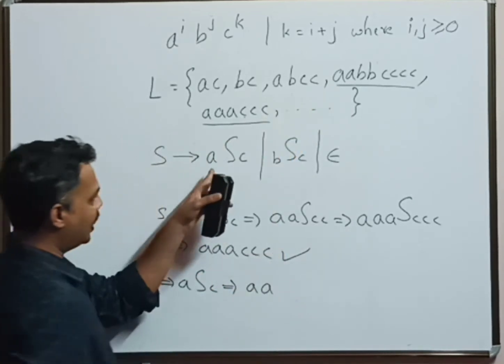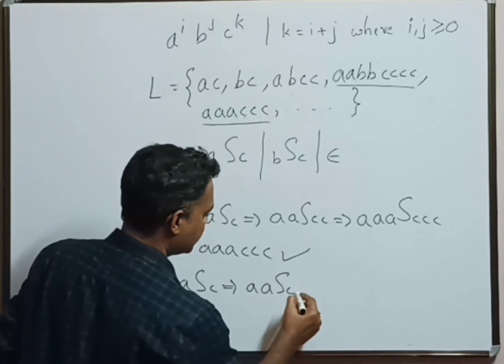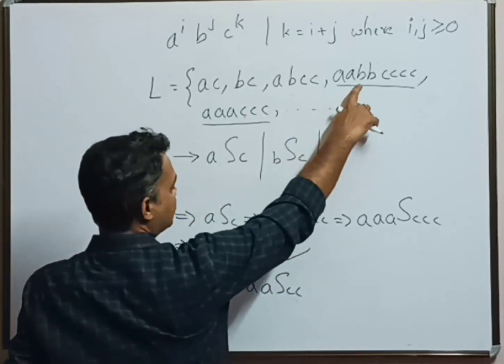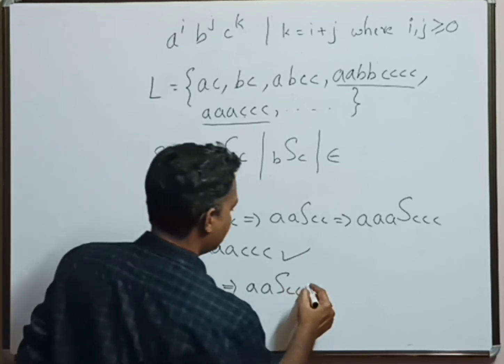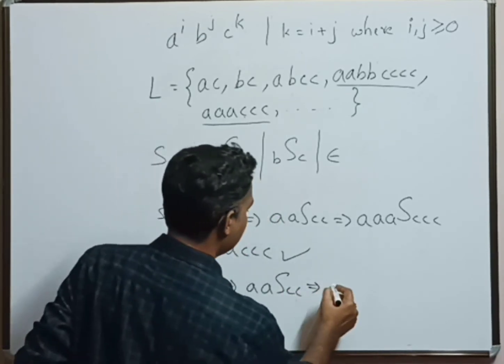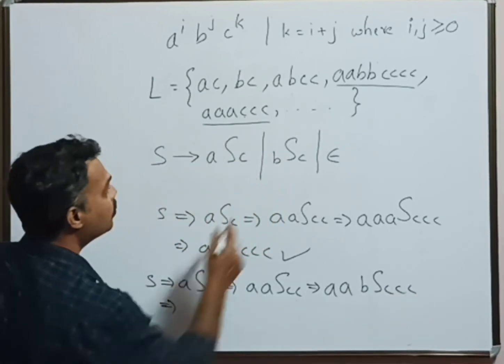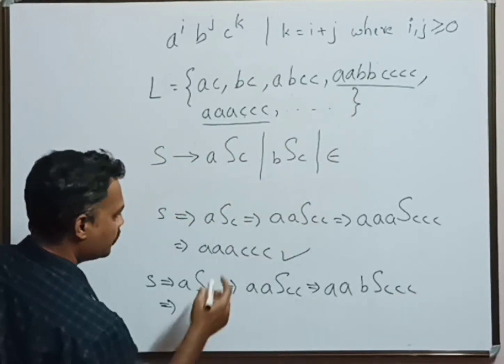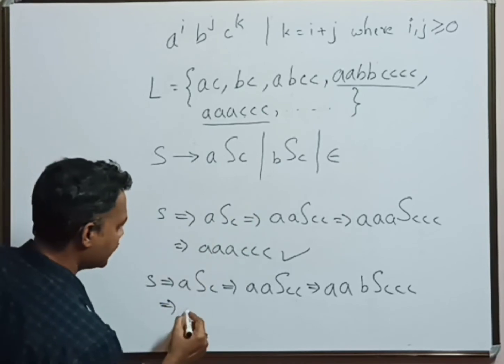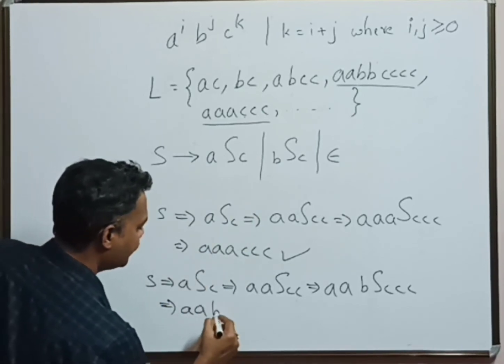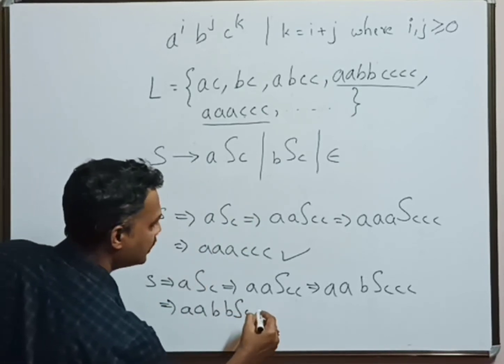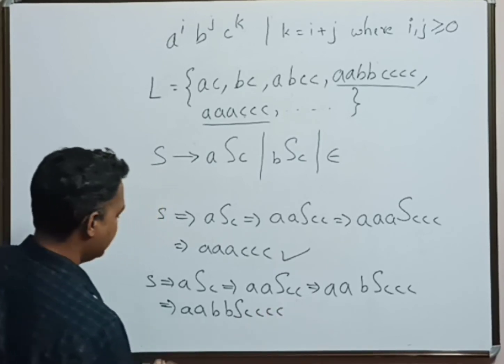Now it starts with b, so we can apply the second rule: aabSccc. There is one more b after this b, so we can once again apply the second rule: aabbScccc. Now we have got our string aabbcccc.